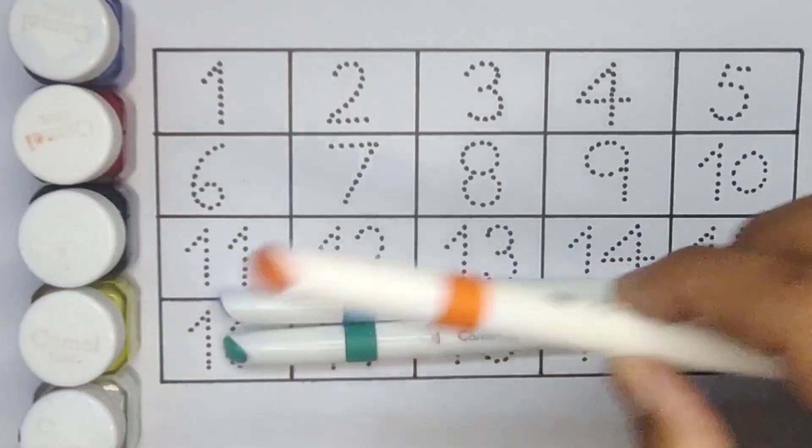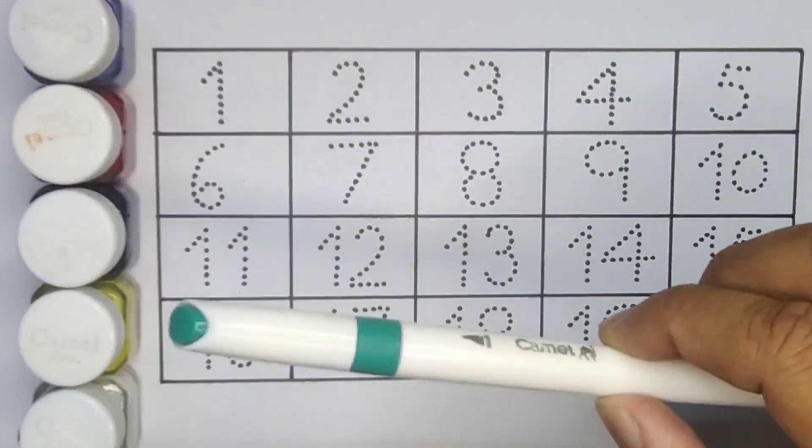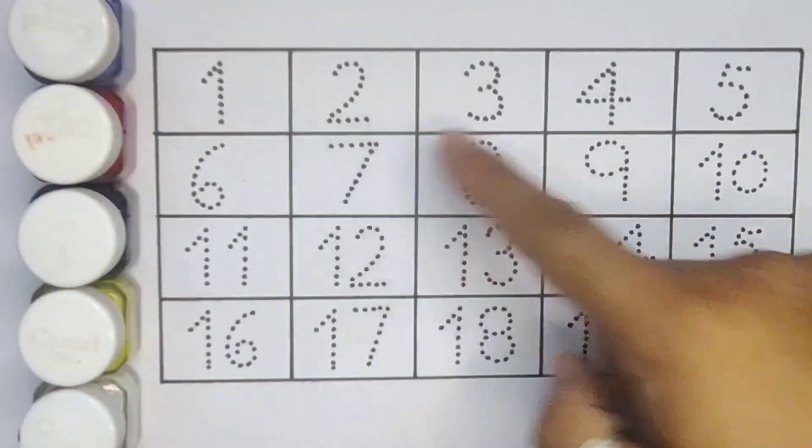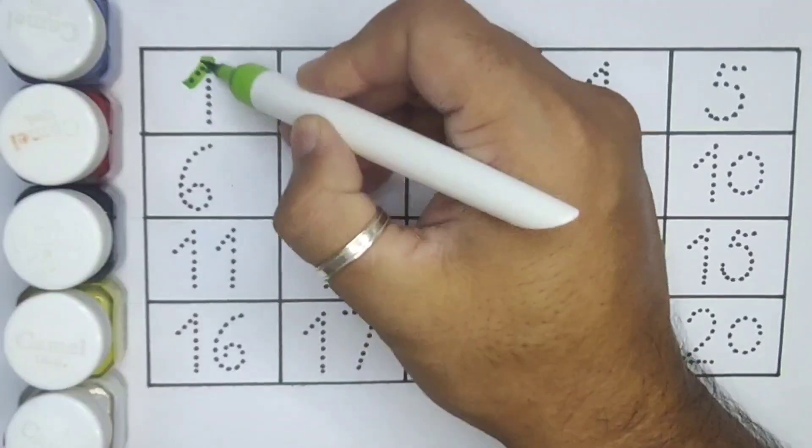Orange color, sky blue color, and green color. Now let's learn the numbers counting one to twenty. First, one, number one.